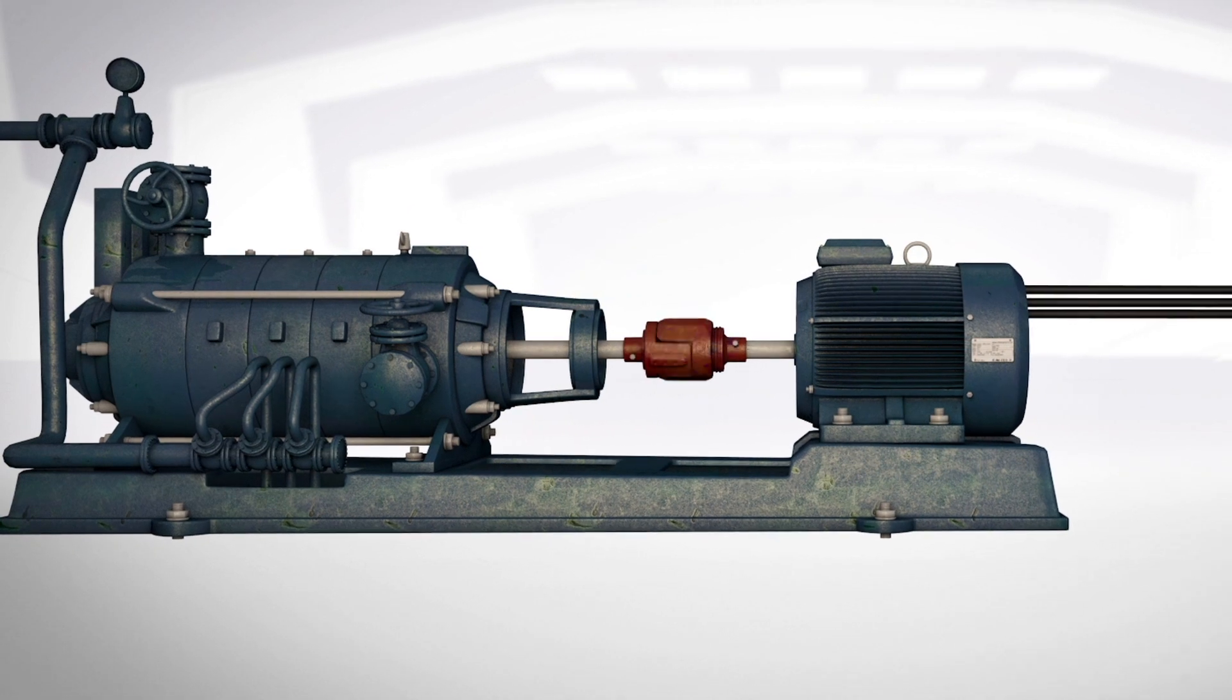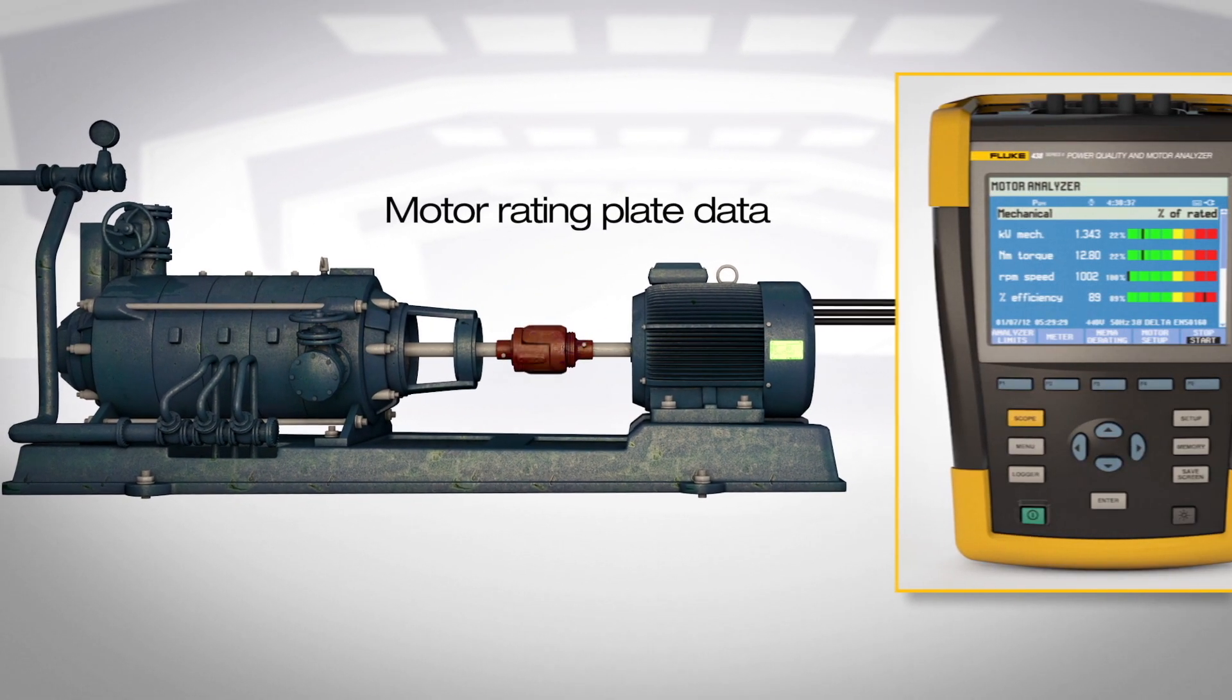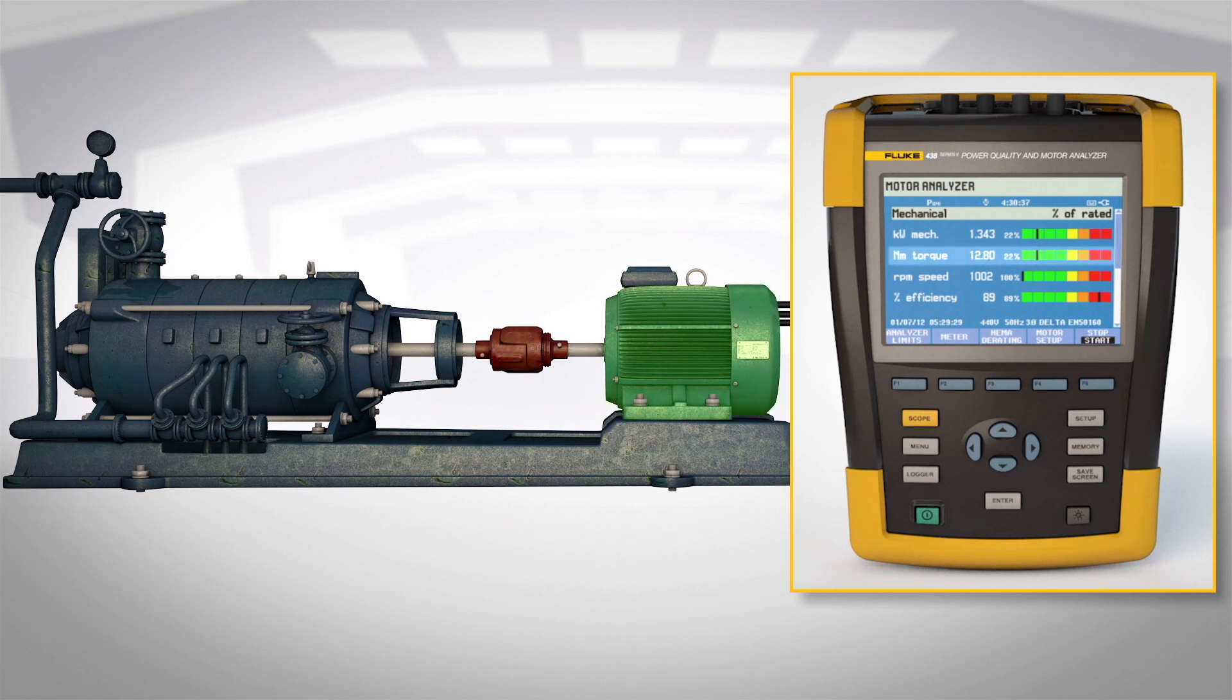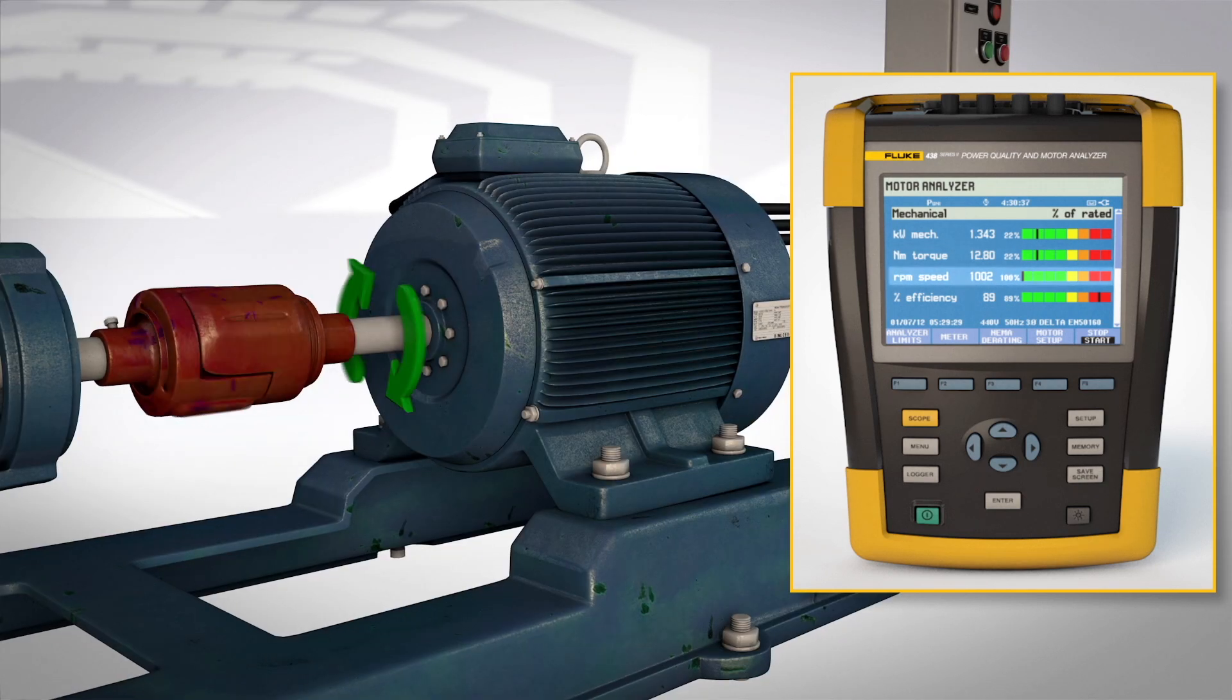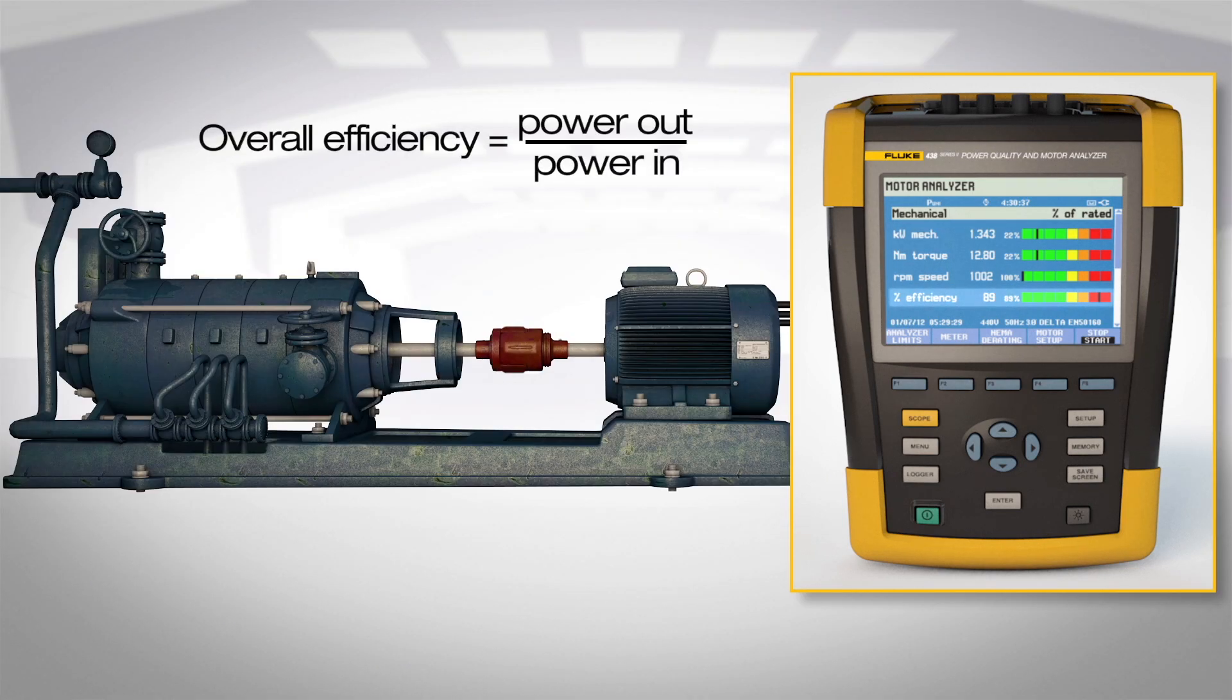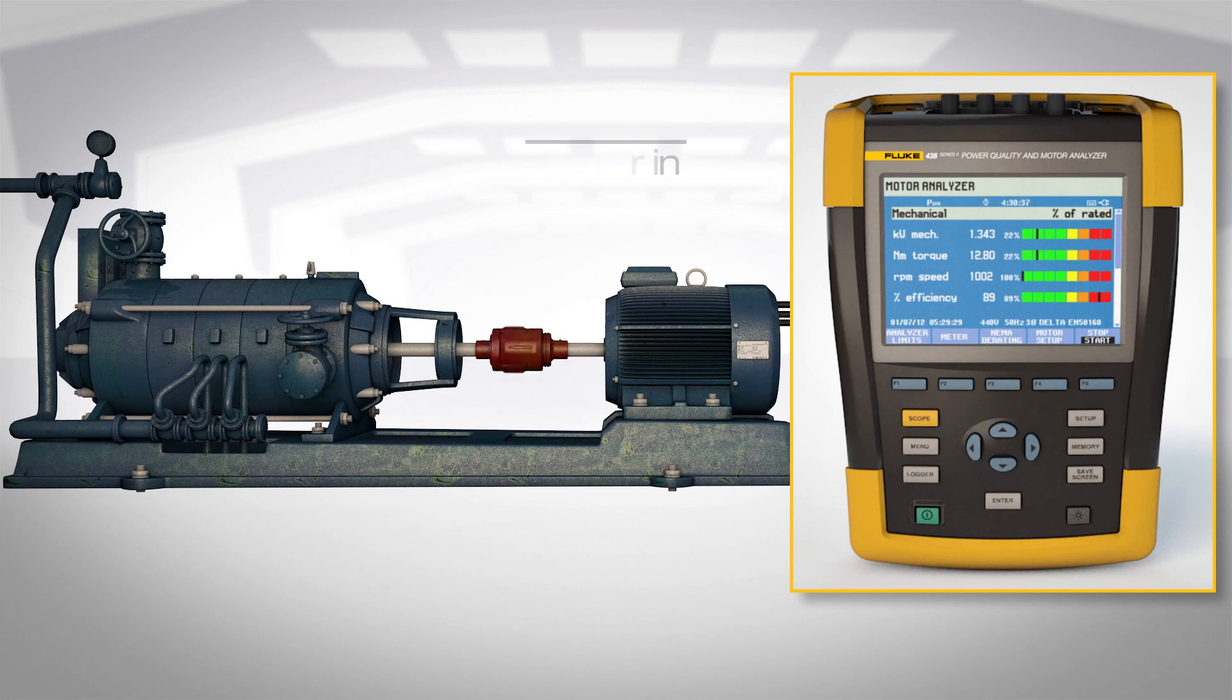Using three-phase electrical measurements on the input and motor rating plate data, the 438 calculates torque, the most critical mechanical performance variable, speed, load on the motor shaft, and overall efficiency without the need to install mechanical sensors.